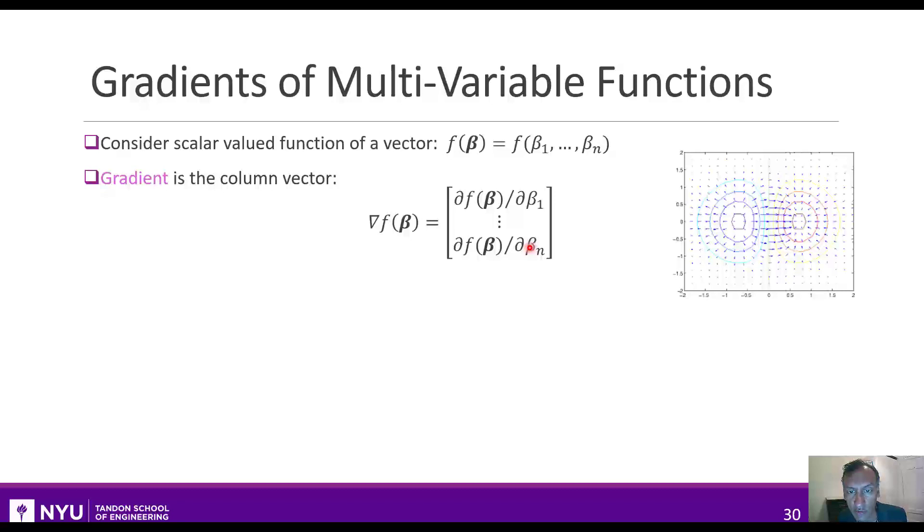Now, you can think of the gradient geometrically. For each point beta, it produces a vector.